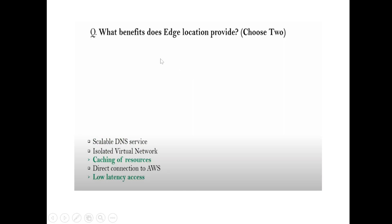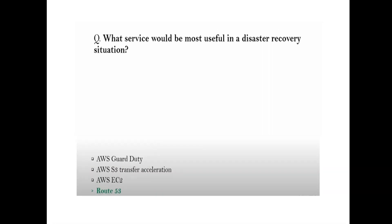Question: What benefit does a location provide for caching of resources? Answer: Low latency access. Question: What service would be most useful in a disaster recovery situation? Answer: Route 53.